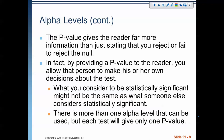The p-value gives the reader far more information than just stating that you reject or failed to reject the null. This changing alpha level kind of gives the reader their own opportunity to decide what is strong and not strong evidence. If you set the alpha level at 0.10 and you have a 0.07 p-value, somebody else reading your research might say 0.10 is a terrible idea — we should be doing 0.05, and it's not significant at 0.05. Giving that information allows your readers to make that decision themselves, because what you consider to be statistically significant might not be the same as what someone else considers significant. That's why there's more than one alpha level that can be used, but each test will give only one p-value.